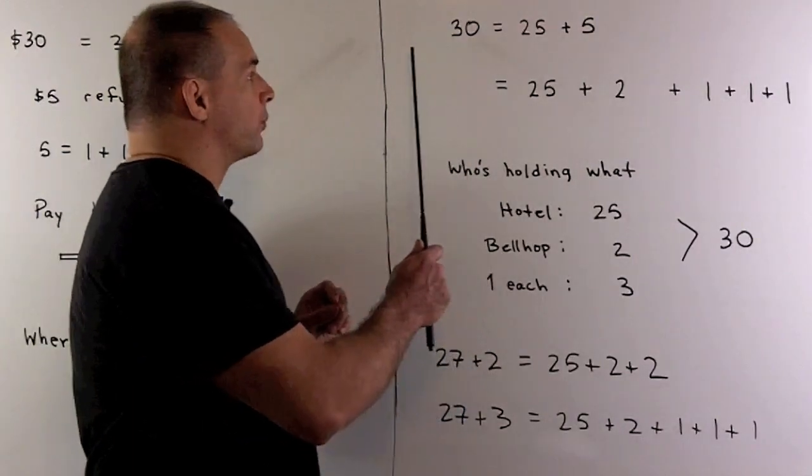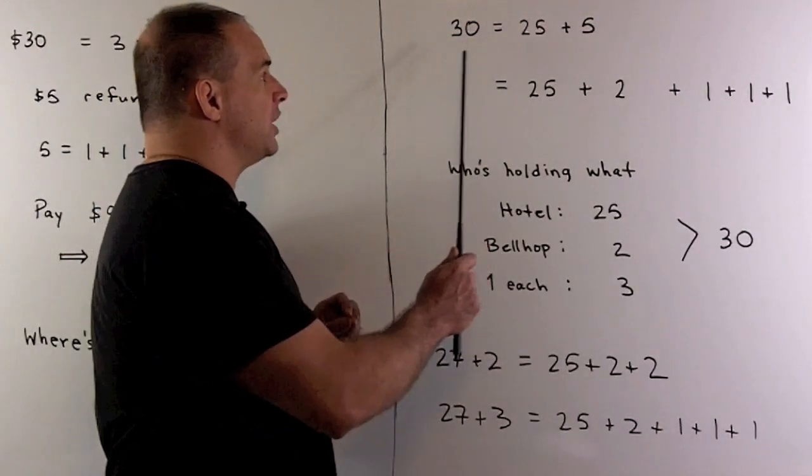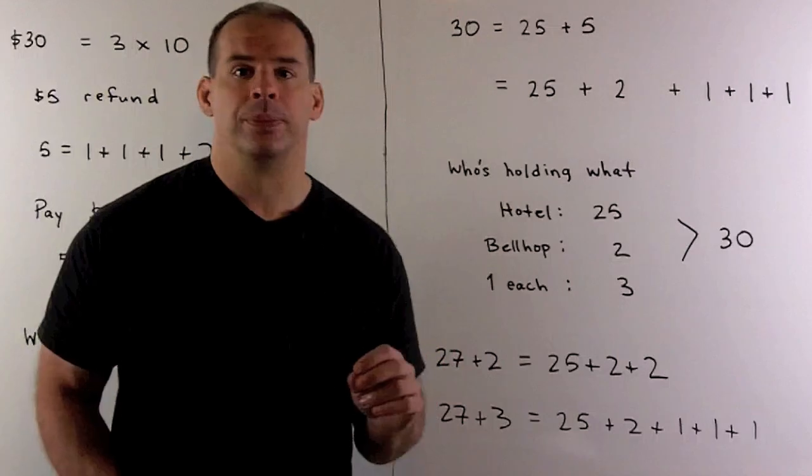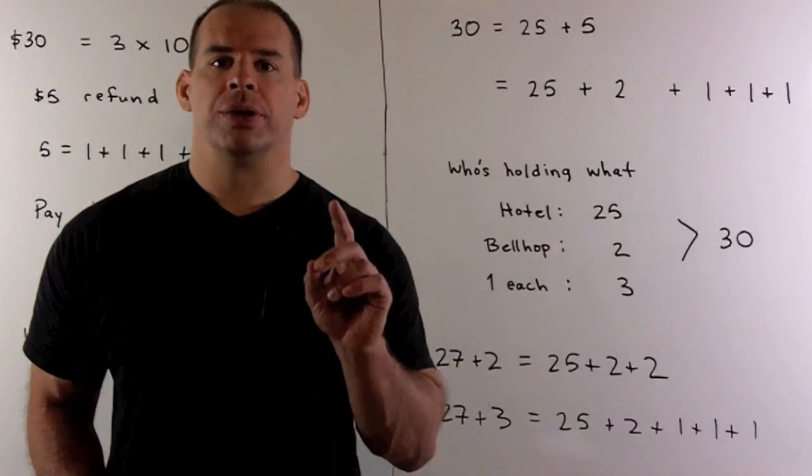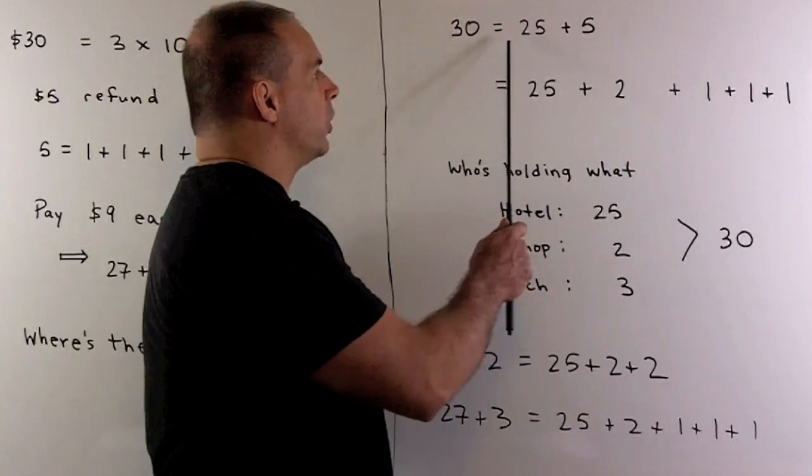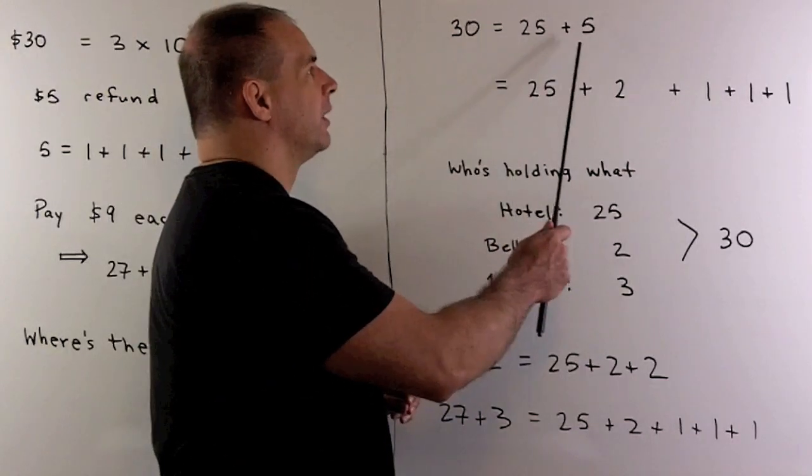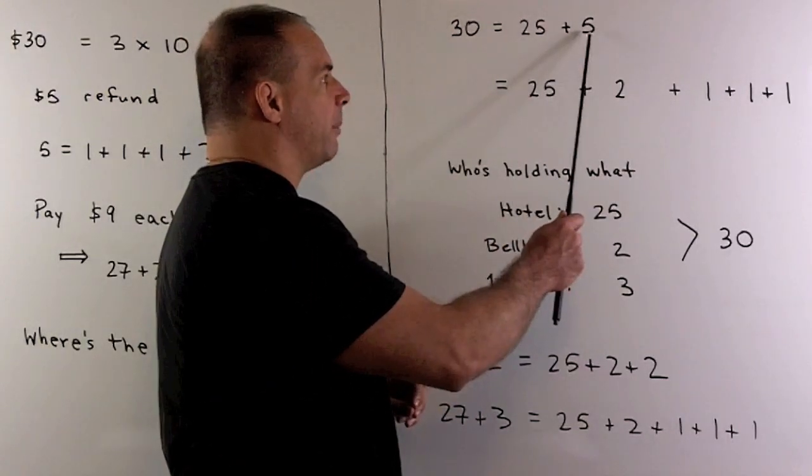We start off with our three guests paying $10 each for $30. The manager decides he's only going to charge $25. So we have $25 going to the hotel. $5 is up in the air going back to the guests.